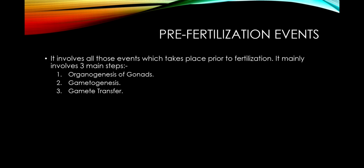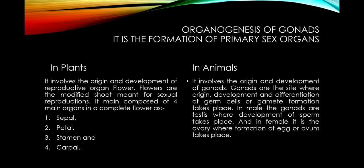Pre-fertilization mainly involves three main steps: number one is organogenesis of the gonads — the development of the sex organs in which the germ cells form; number two is gametogenesis — the process of formation of germ cells; and number three is gamete transfer — the transfer of the gamete from one organism to another. I am comparing these events side by side between plants and animals because in chapter two you will study sexual reproduction in plants, and in chapter three you will study sexual reproduction in animals and humans. In case of plants, organogenesis involves the origin and development of the reproductive organs like the flower.